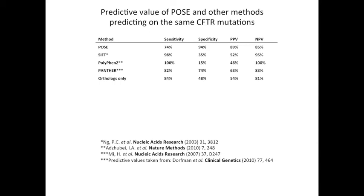We then scored each of the 12 paralogous groups independently, and the ABC-C9 paralogous group gave us the best mix of sensitivity and specificity. Here you see decent sensitivity again and an increased specificity relative to just looking at the orthologs.